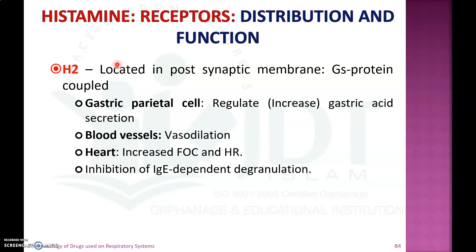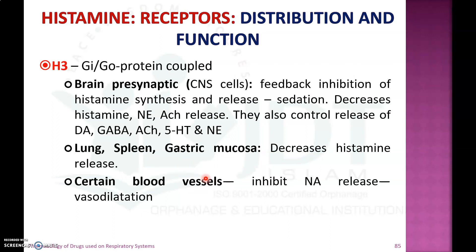The second receptor is the H2 receptor, located in the post-synaptic membrane. It is a Gs protein-coupled receptor present in gastric parietal cells, where its activation increases gastric acid secretion. In blood vessels it produces vasodilation, in the heart it increases the force of contraction and heart rate, and H2 receptor activation also inhibits IgE-dependent mast cell degranulation.